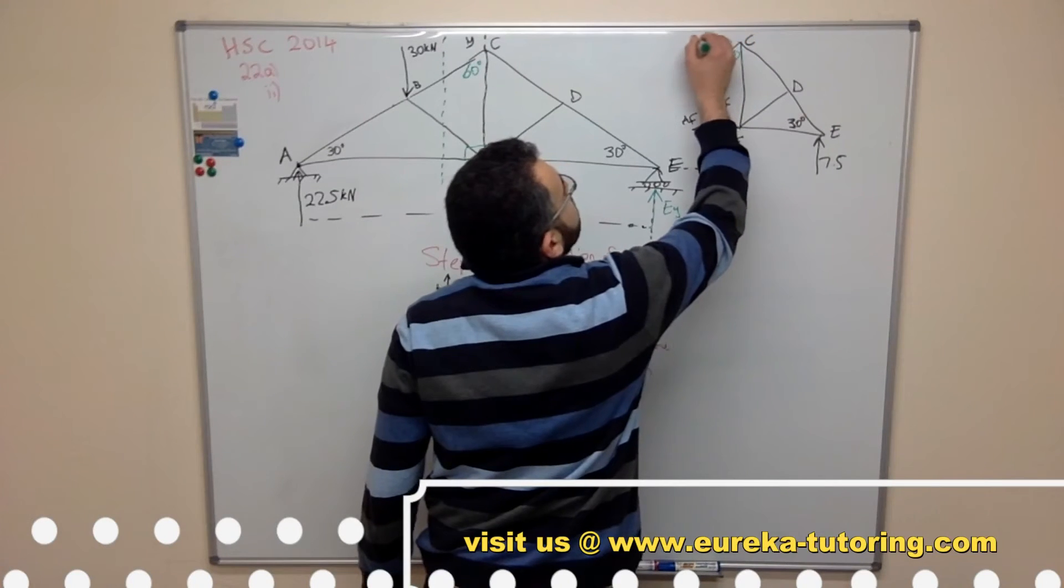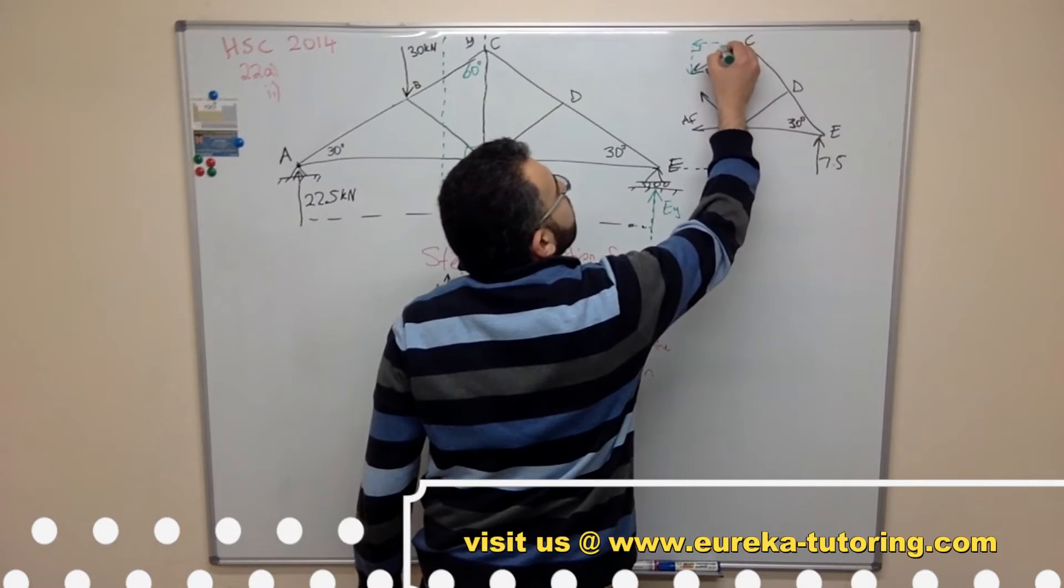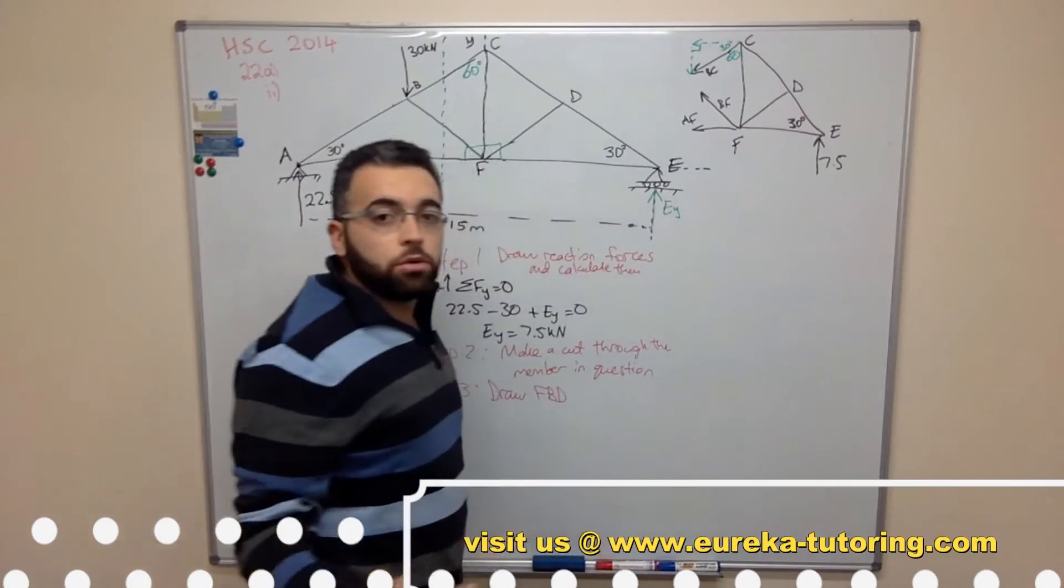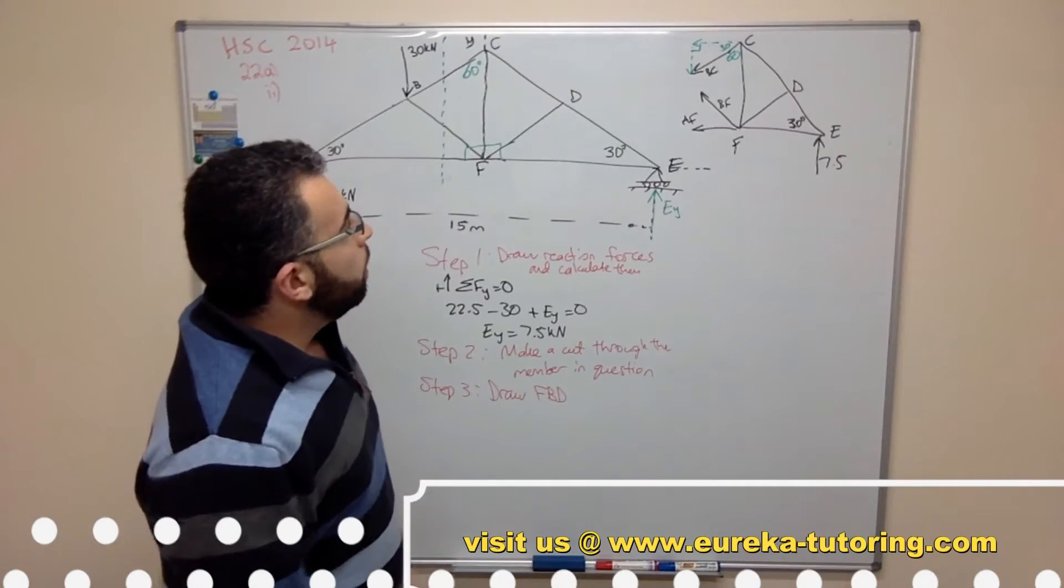I'm going to break it up into its components. So there's your horizontal, there's your vertical. This is the right angle. This will be 30 degrees because it's a complementary angle. And complementary angles add up to 90 degrees.